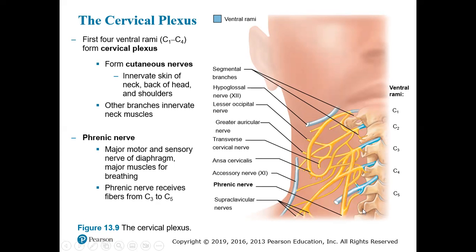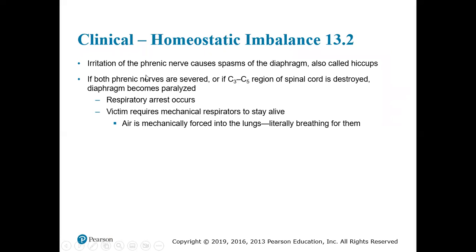The phrenic nerve receives its primary fibers from C3 through C5. Irritation of the phrenic nerve can cause spasms of the diaphragm — these are hiccups. If both phrenic nerves are severed, or if the C3 through C5 region of the spinal cord is compressed, you can paralyze your diaphragm. If it's destroyed it can be paralyzed; if you have compression there, you might have difficulty breathing.